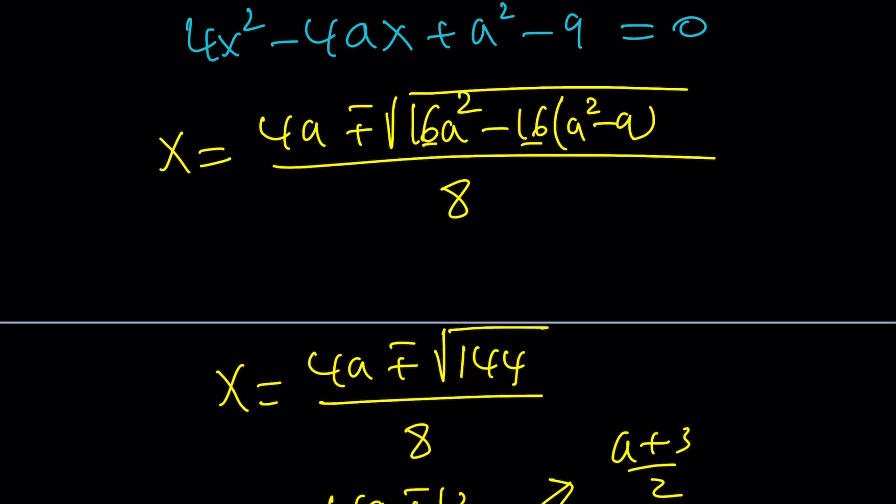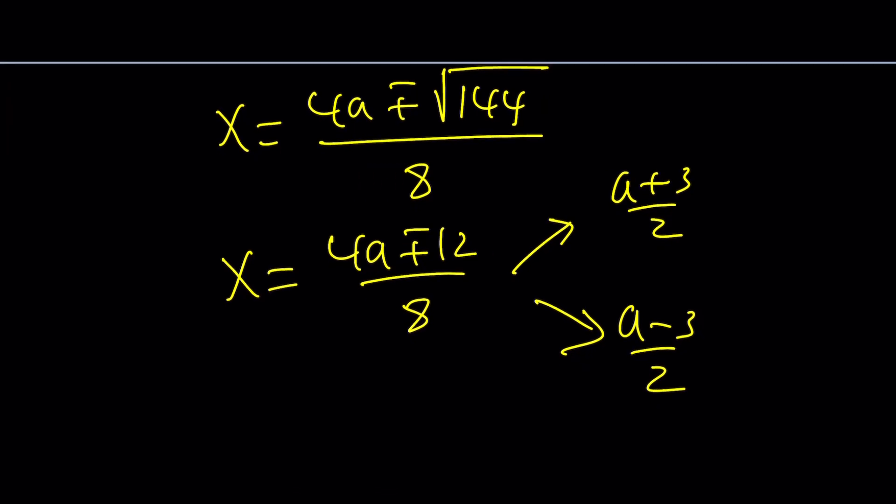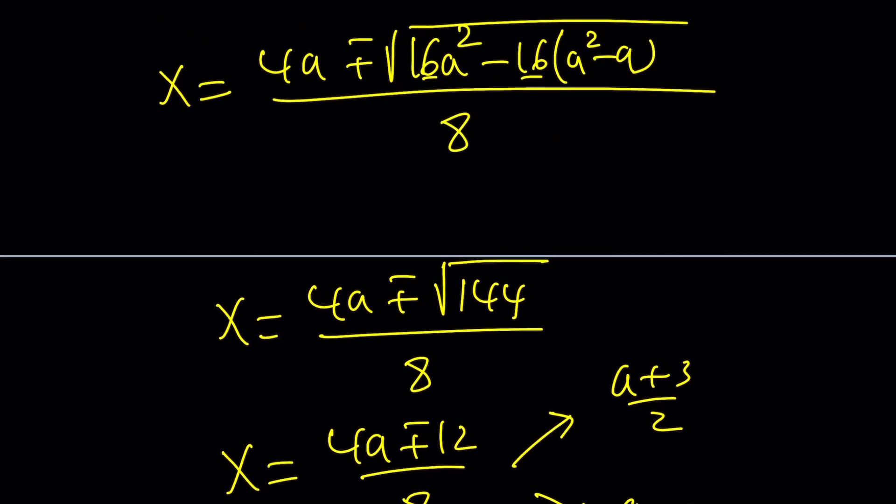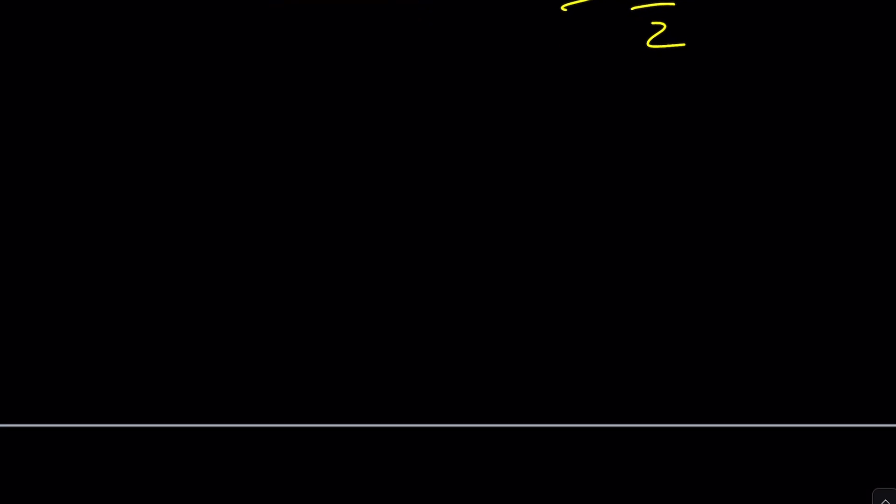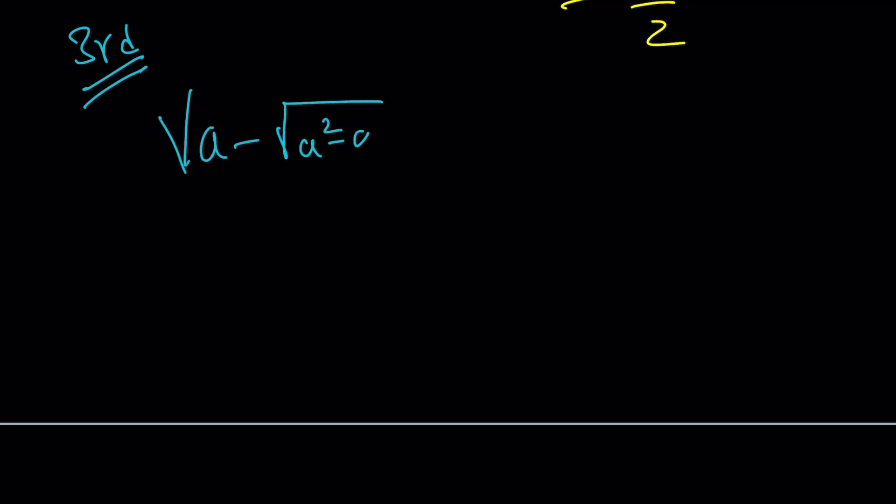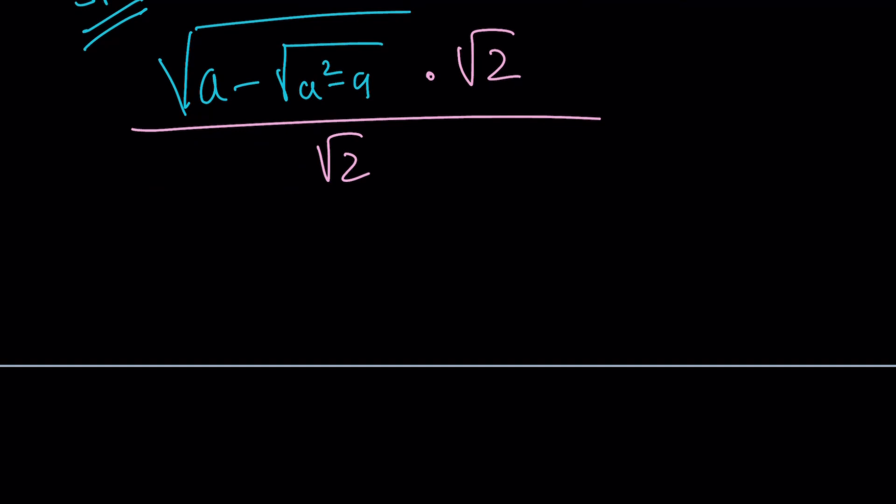So I told you that I was going to show you three methods. Let's just continue since I already made the joke. I can go ahead and proceed with the third method. Now, with the third method, we're going to take this expression and simplify it. Multiply by root 2 and divide by that. Inside, you're going to get 2a minus 2 times the square root of a squared minus 9 all over root 2.